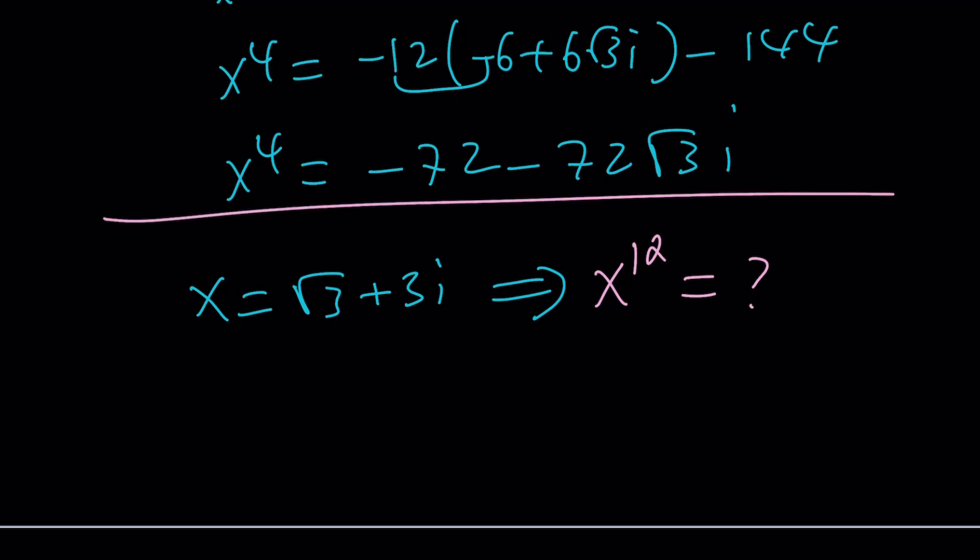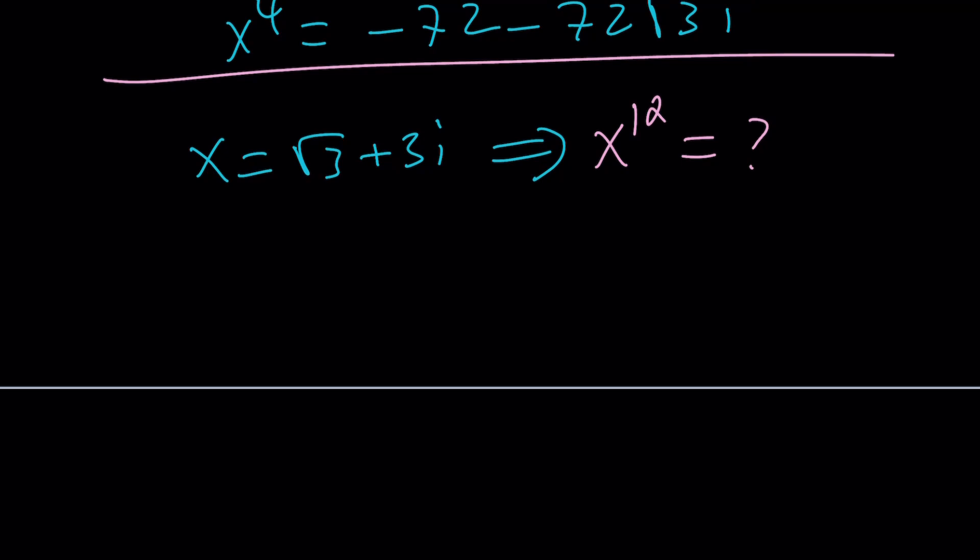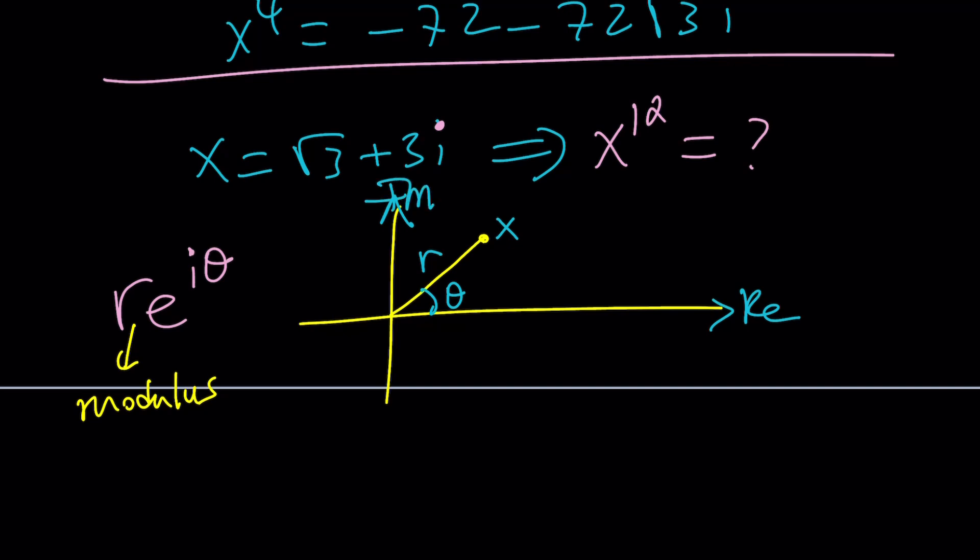Let's write this in polar form, because the polar form is actually going to give us an idea about what this number is all about. Polar form can be written as r e to the power i theta, where theta is the angle or the argument, and r is the modulus or the absolute value. We can express a complex number like this, and that's going to make an angle theta, and r is the distance between the number x and origin. This is the real axis, this is the imaginary axis.